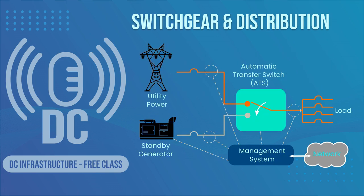Switchgear and distribution: This diagram illustrates how the automatic transfer switch (ATS) monitors the utility source and initiates engine starting and transfer of the load from the utility to the generator as soon as the generator is available and stable. The ATS also retransfers the load to utility when normal conditions are restored. We will discuss more about ATS in another video.